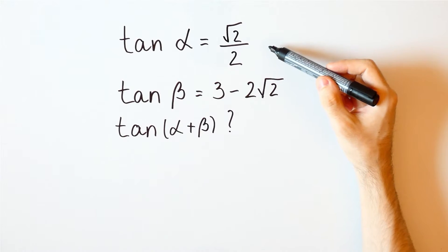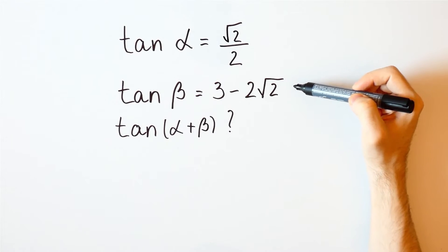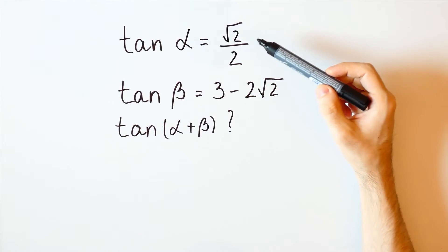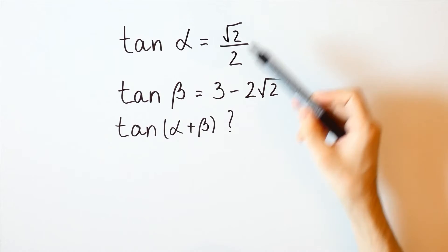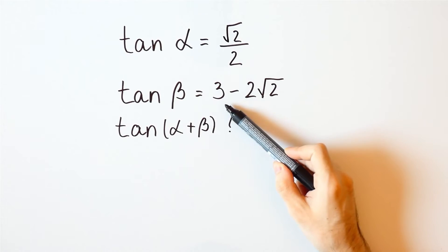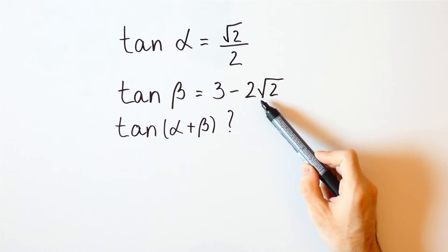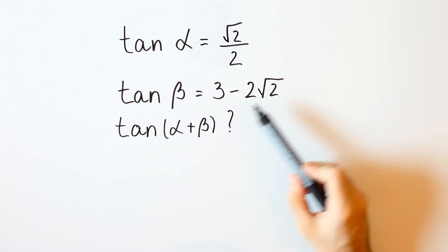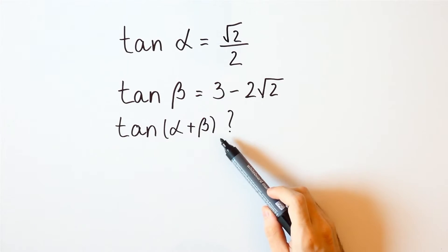Suppose we know the tangent of alpha and the tangent of beta. In this case, the tangent of alpha is equal to the square root of 2 over 2, and the tangent of beta is equal to 3 minus 2 times the square root of 2. Can we calculate the tangent of alpha plus beta?